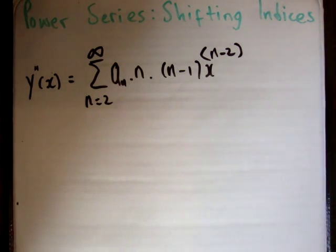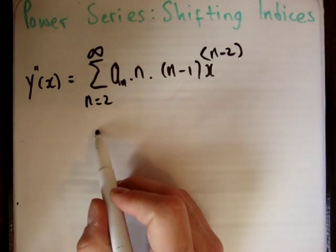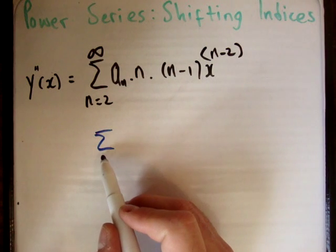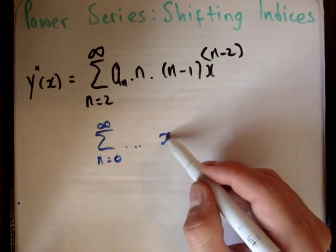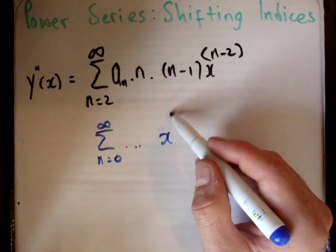And when we're dealing with power series, in particular when we're solving differential equations, you always need each of the terms to start at the same point, we'll say n is equal to 0. And the power on their x must be the same, so we'll say x to the n.